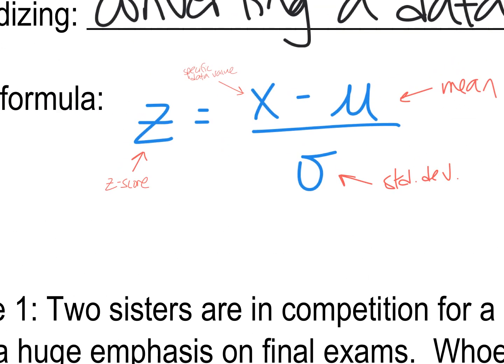Here's our formula. The Z-score equals your specific data value minus the mean divided by the standard deviation. So note the symbols that I'm using here, and those stand for mean and standard deviation.